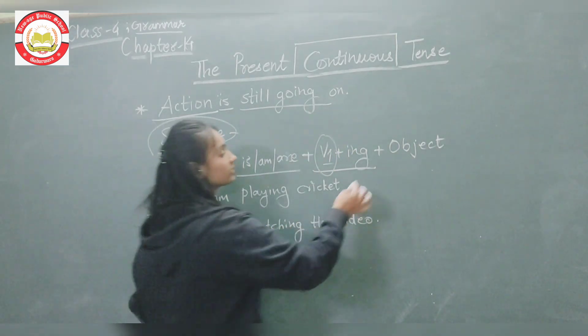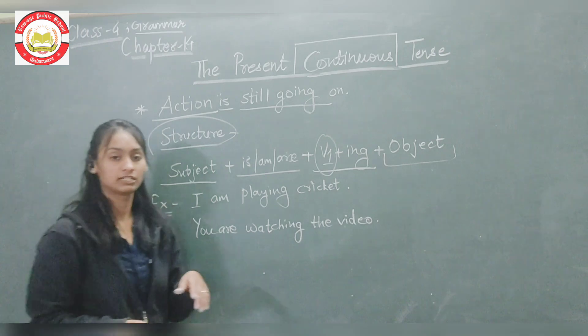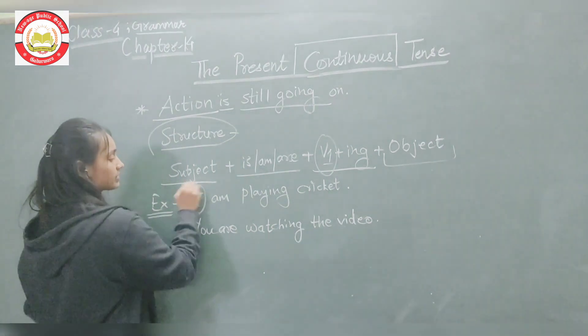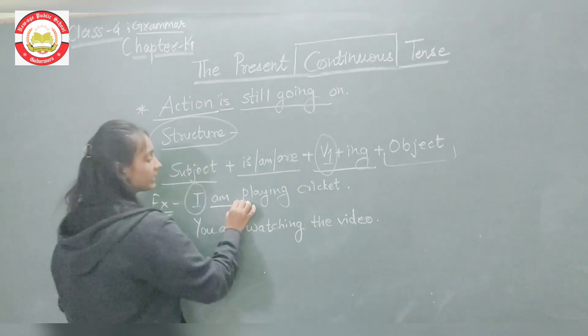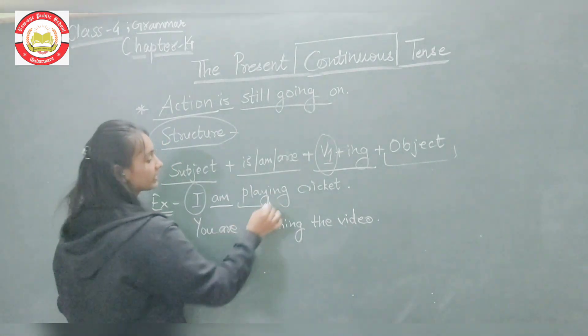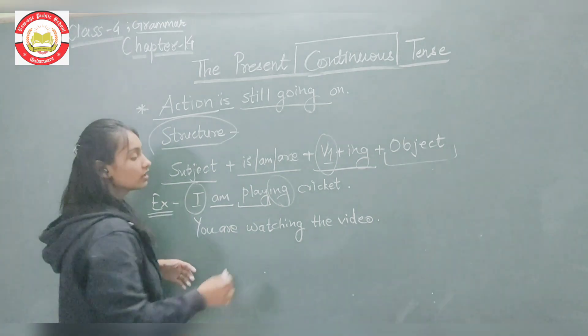After that comes the verb with -ing and the object. The structure is: subject plus helping verb (is/am/are) plus verb in -ing form plus object. For example, I am playing cricket - I is the subject, am is the helping verb, playing is the verb form, and cricket is the object.